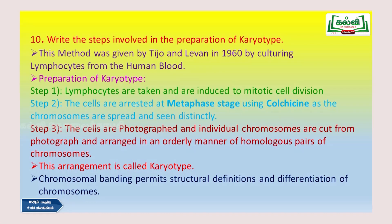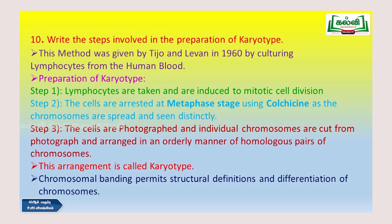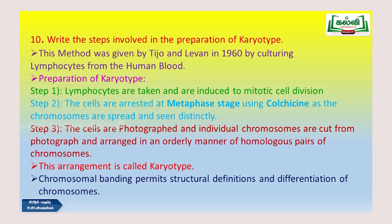Ordinary lymphocytes don't divide by themselves, so once we take them we induce those cells to divide and they undergo mitosis. After that, when the cells are dividing and reach the metaphase stage — where all chromosomes lie in the center of the cell — a chemical called colchicine is given, which is very important. Colchicine arrests the metaphase stage so we can clearly and distinctly see the chromosomes.